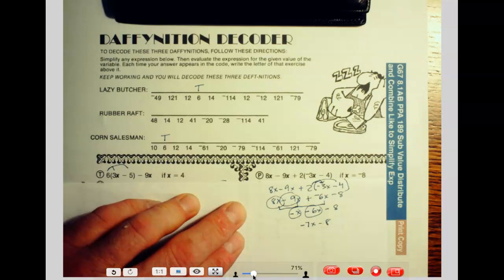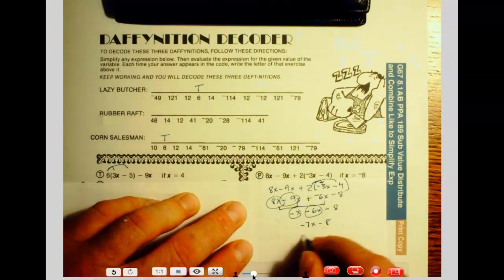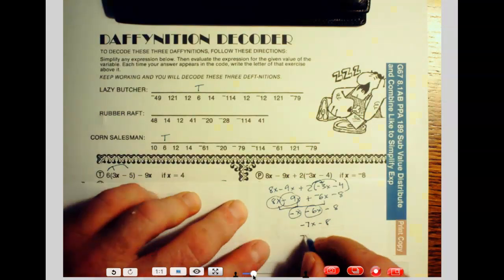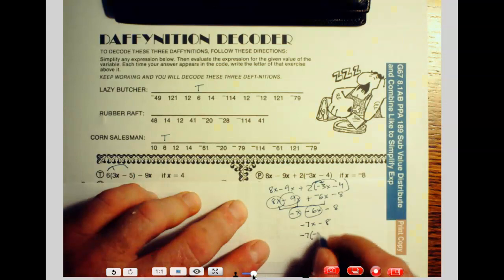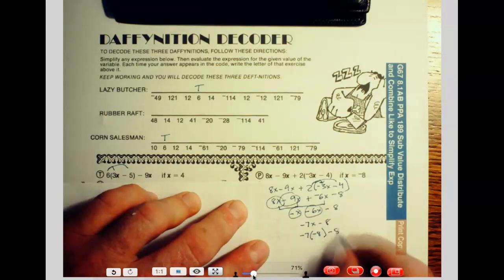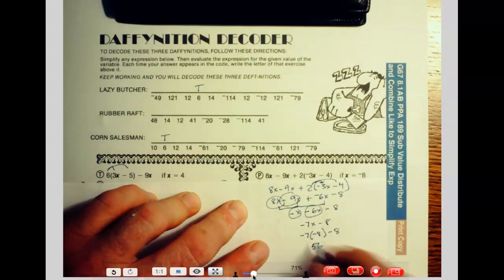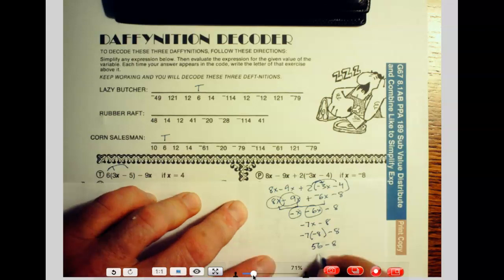So let's just substitute in the x value for x, which is negative 8. So let's do negative 7, negative 8, minus 8. Well, 7 times 8 is 56, and it's going to be positive because we've got negative times negative minus 8. That's going to be 48 positive.